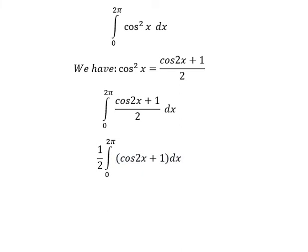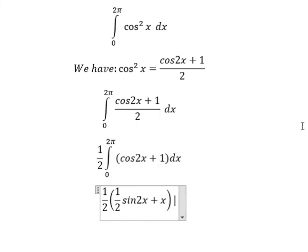Now we can find the antiderivative. The integral of cos2x is (1/2)sin2x, and the integral of 1 is x. We apply the bounds from 0 to 2π.